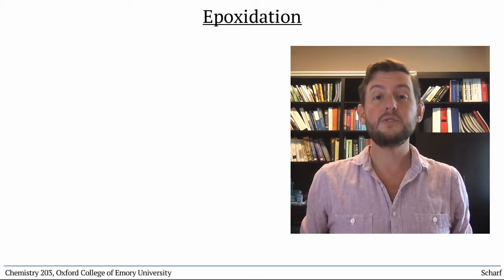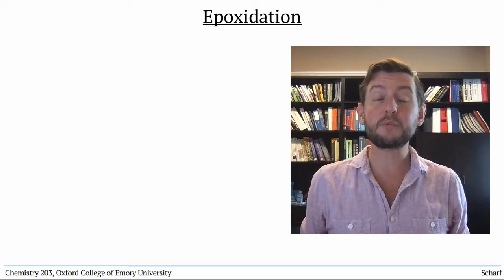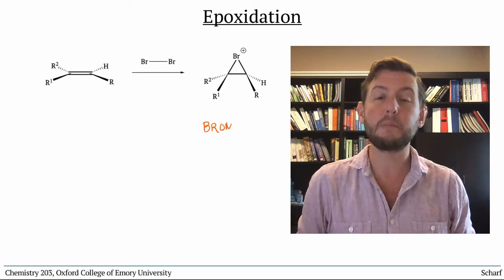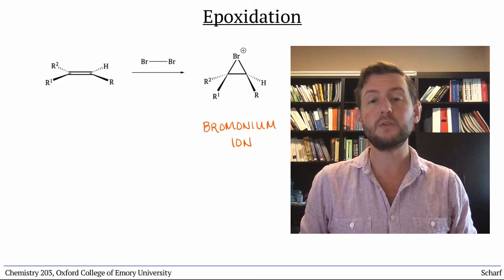In the last video, you saw how alkenes react with Br2 to make odd-looking three-membered rings called bromonium ions, which can be opened by weak nucleophiles.